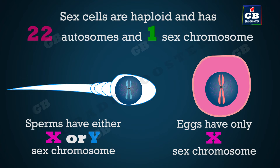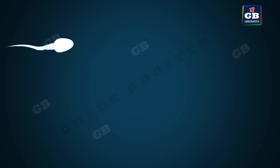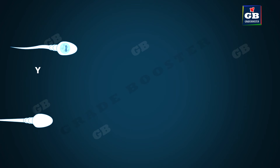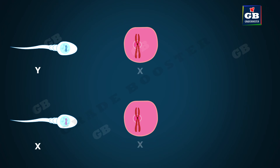Sex cells like sperms and egg cells are haploid in nature, meaning they contain only 23 chromosomes — 22 autosomes and one sex chromosome. In males, the sperms contain only one sex chromosome; it can be either Y or X. That means some sperms carry a Y and some carry an X chromosome. In females, all egg cells produced carry the X chromosome.